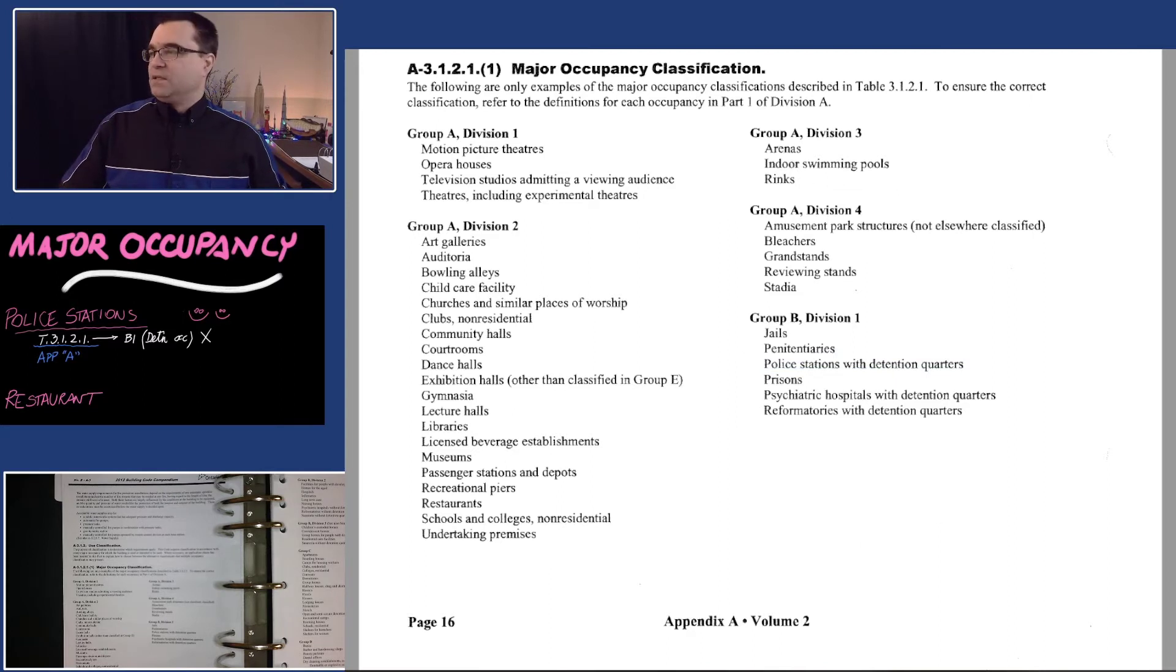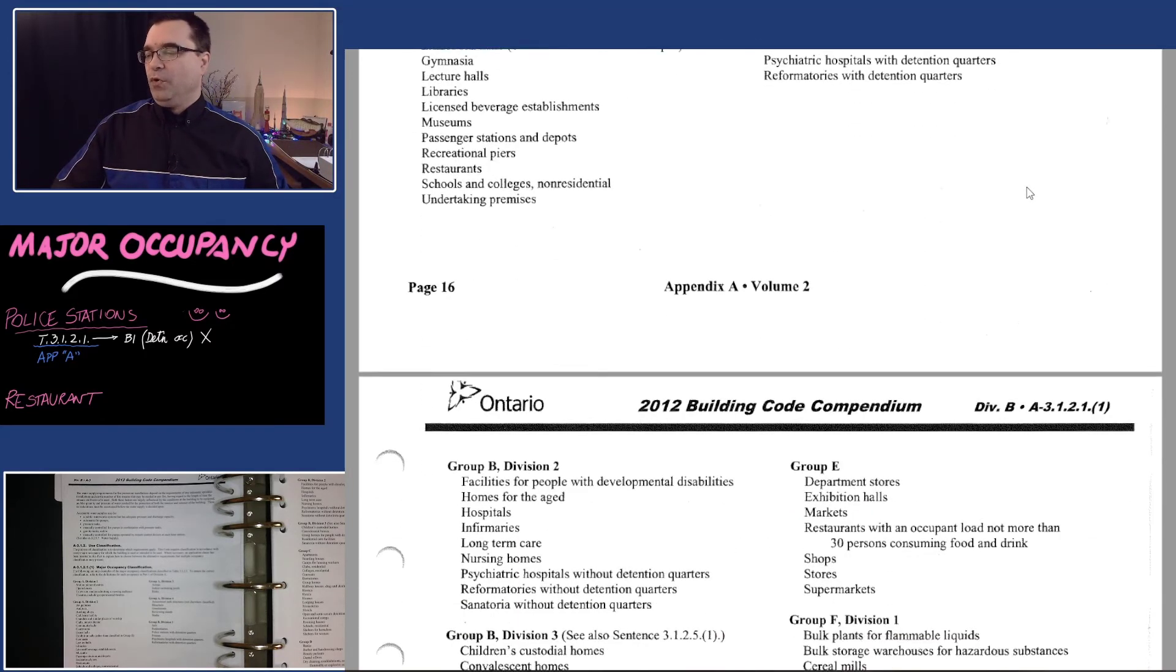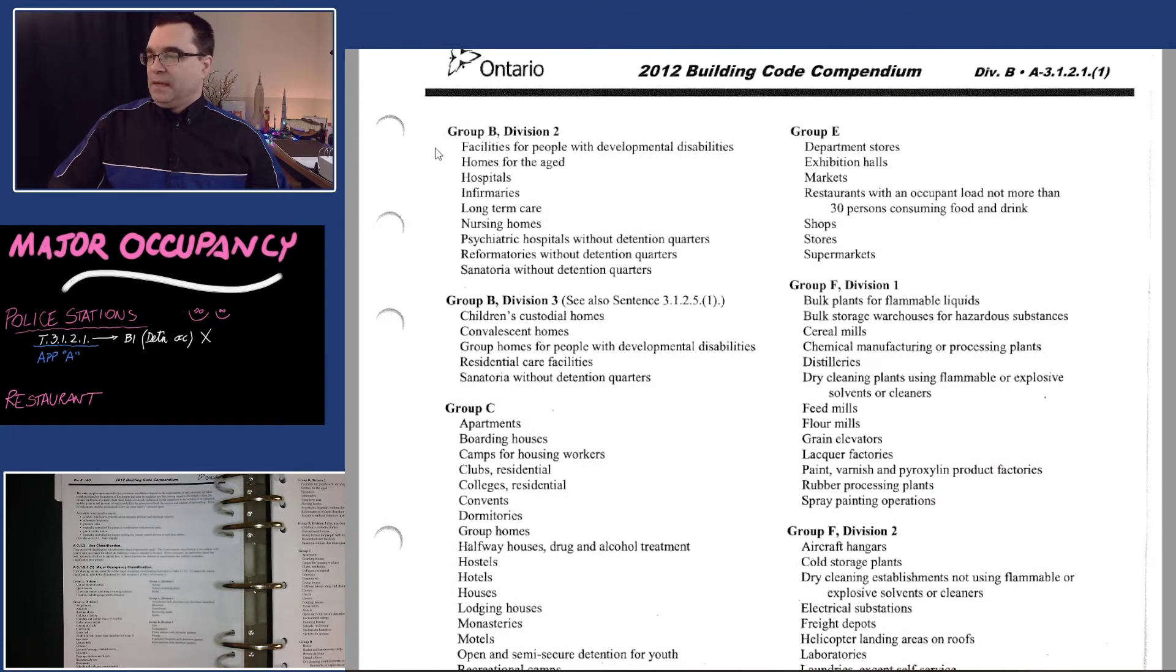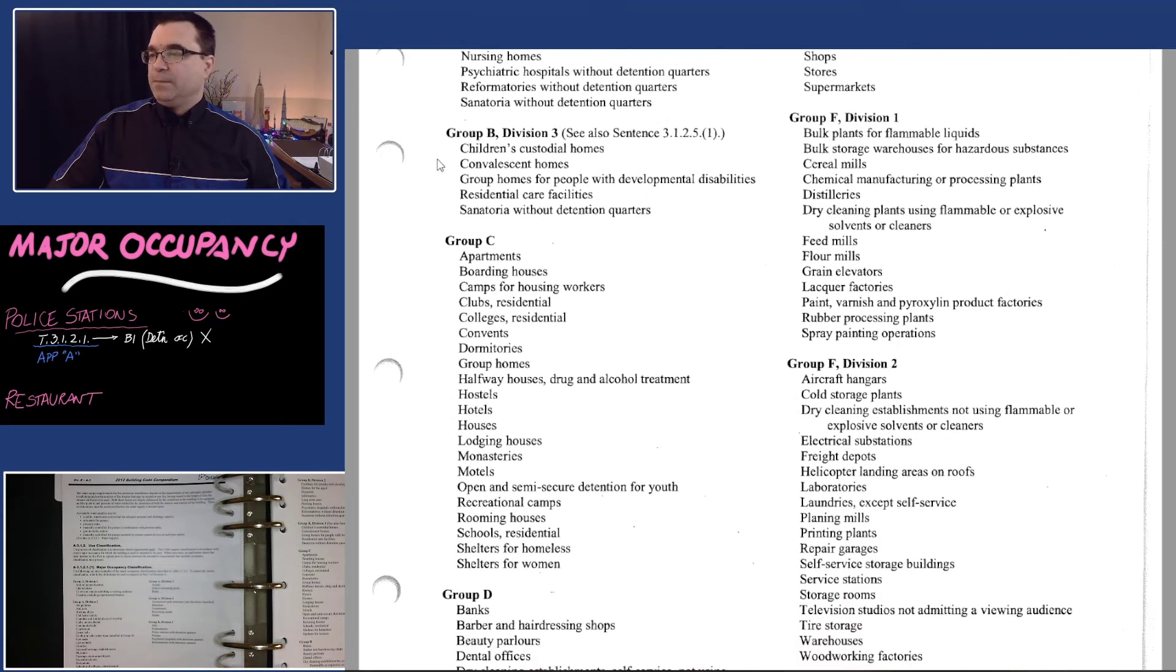My answer to that is but wait, there is more. Stick around. Let's keep on looking. Remember how I said A1 to F3, you have to read everything. So let's keep going. B2, what do we find? Anything for police stations? No. Let's move on to B3. Anything for police stations there? No. Anything under C? No.